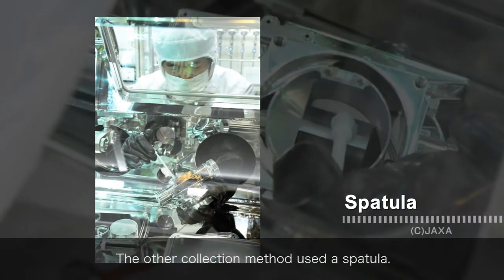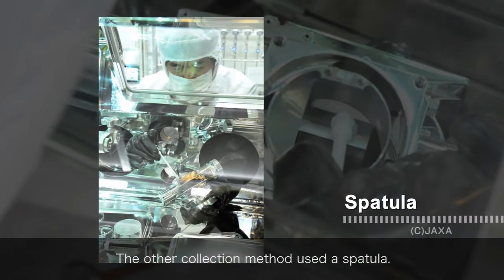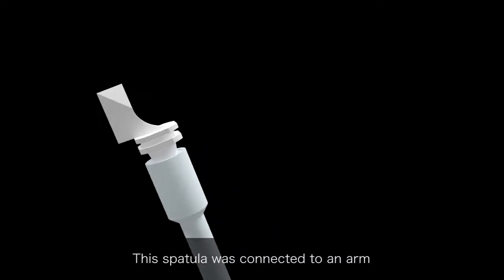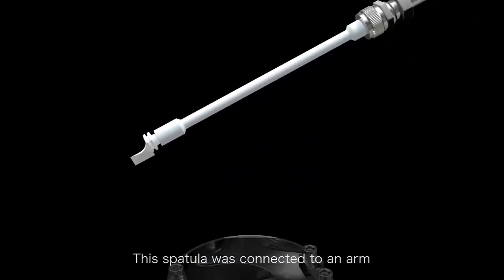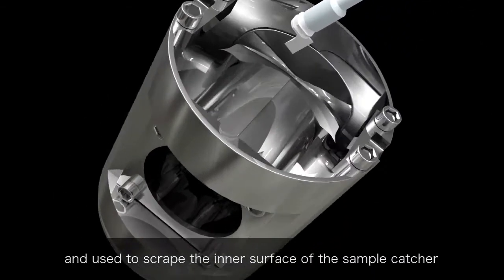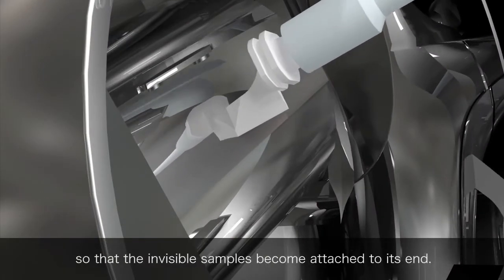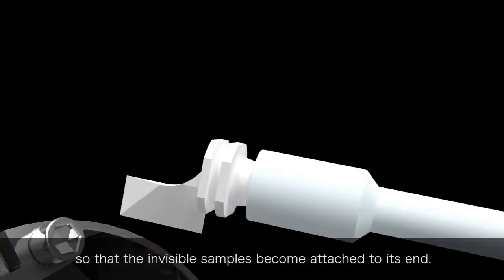The other collection method used a spatula. This spatula was connected to an arm and used to scrape the inner surface of the sample catcher so that the invisible samples became attached to its end.